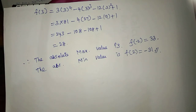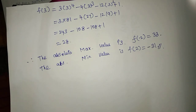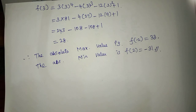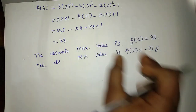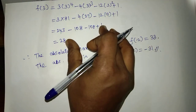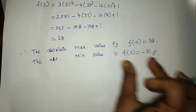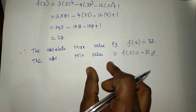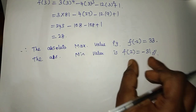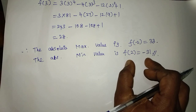This is the procedure for finding absolute maximum and absolute minimum values: first find the critical points, then compute F values at the critical points and at the endpoints of the interval, then compare all the values. The largest value is the absolute maximum and the smallest is the absolute minimum. Thank you.